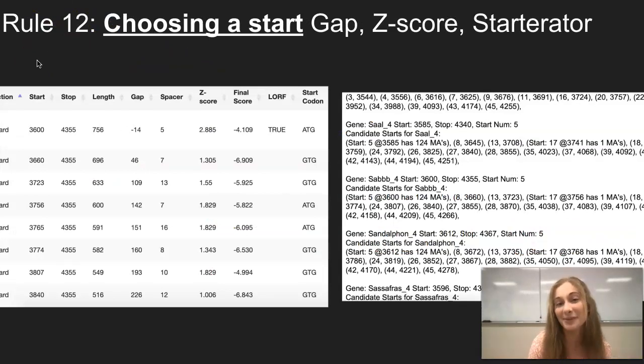Rule number 12 is very similar to rule number 4 as it helps us choose the best start for each gene. But now we are looking at the gap, z-score, and starter rate. As we talked about before, we are looking for the smallest gap. So the negative 14 overlap over here is the best option.